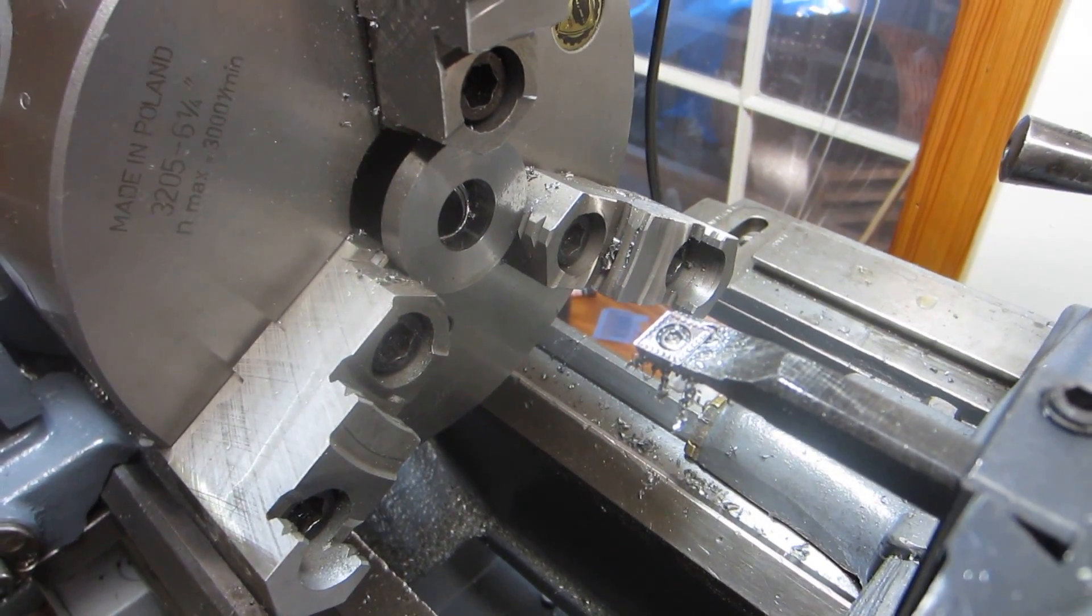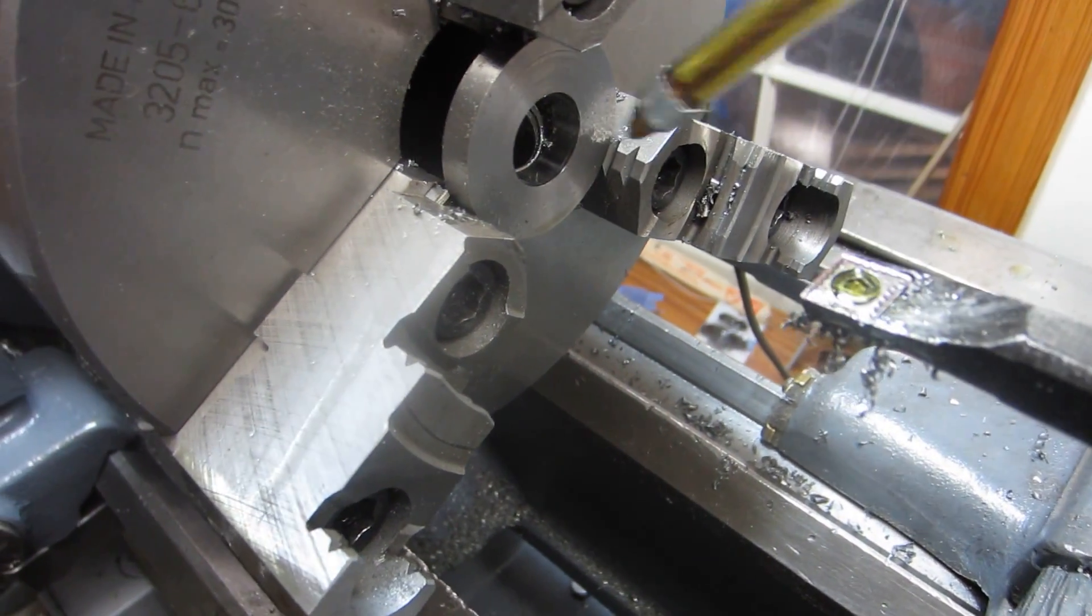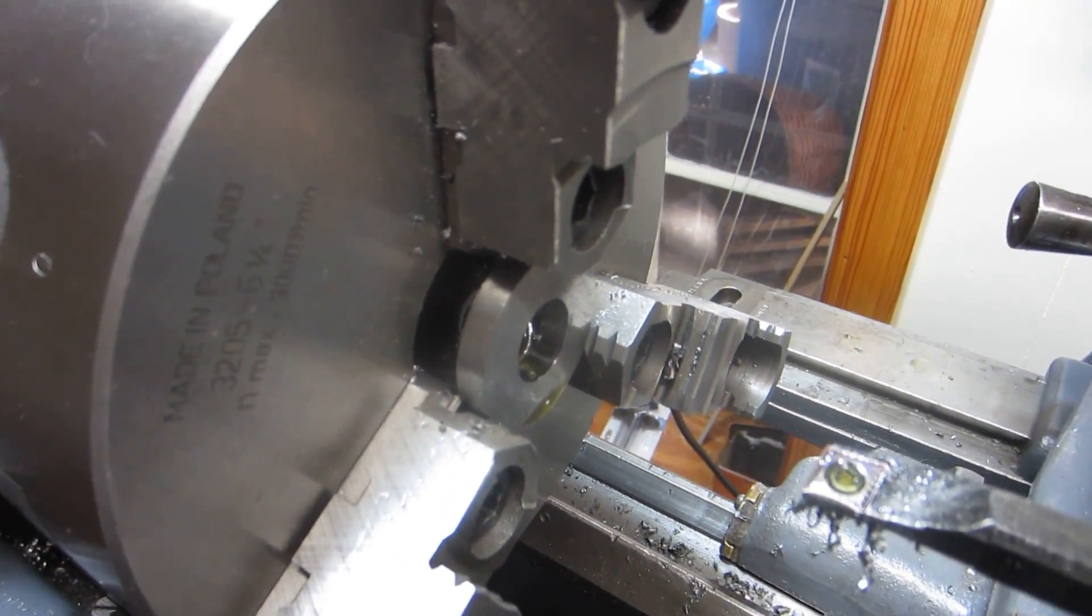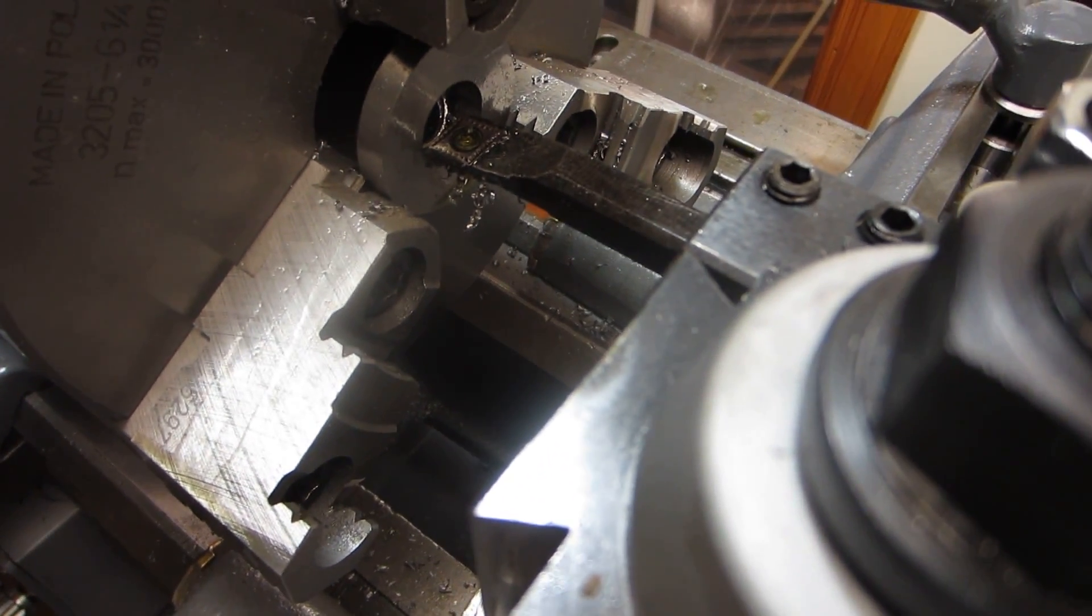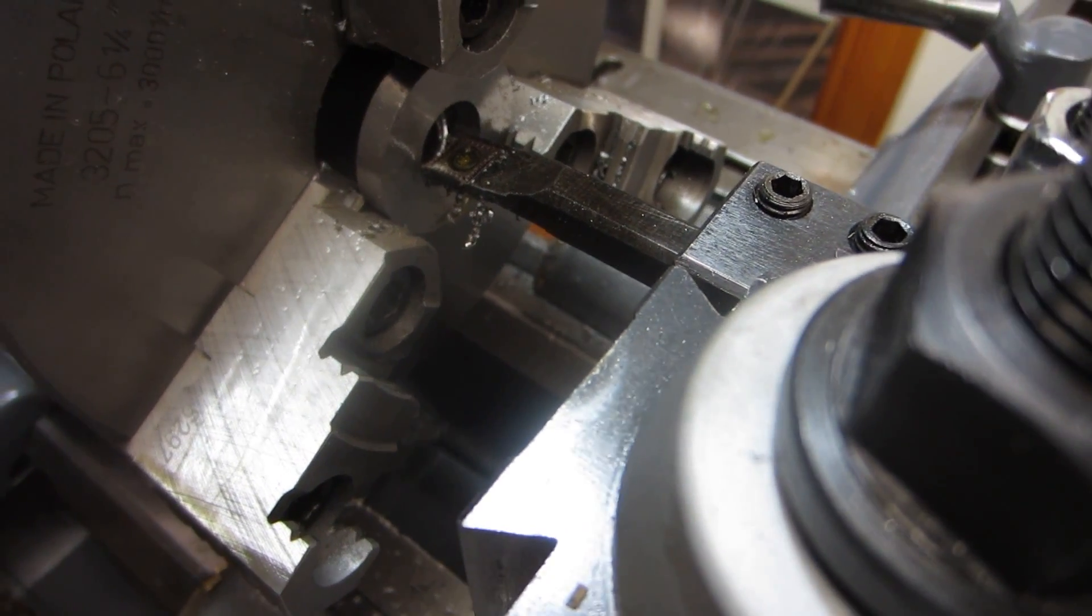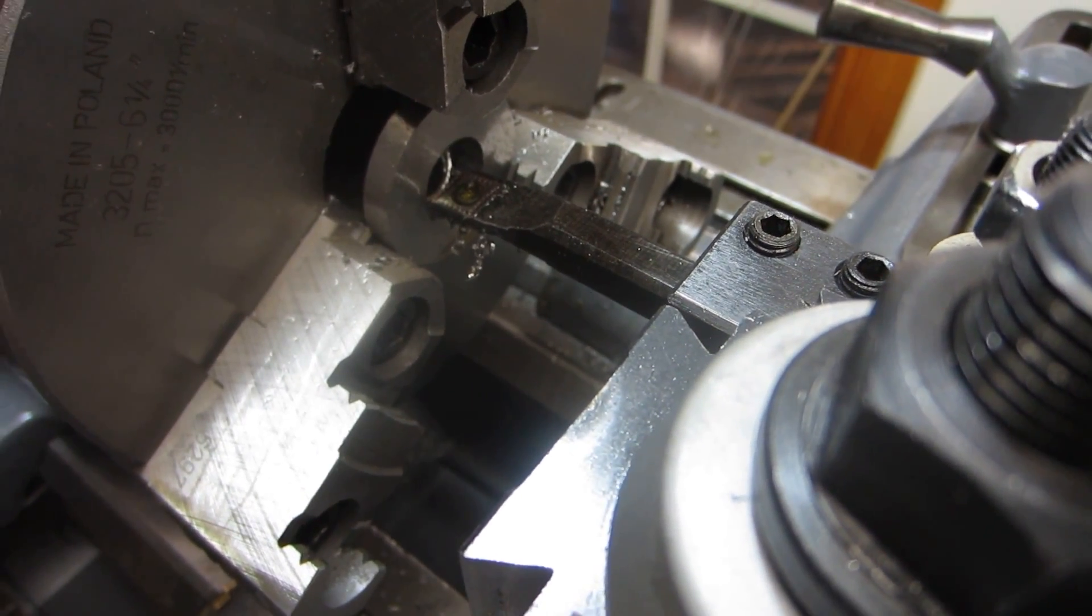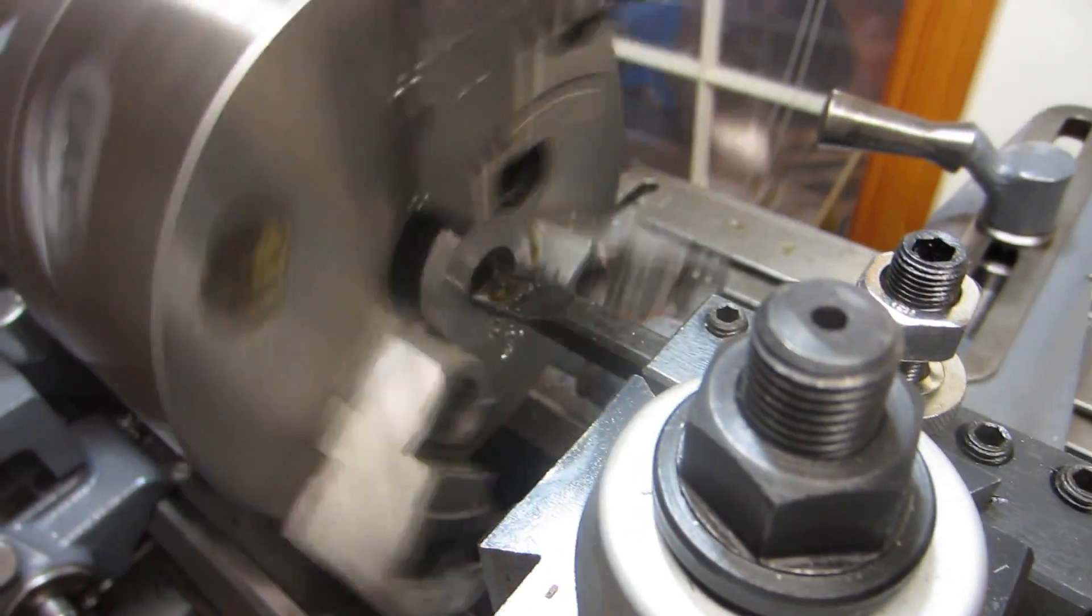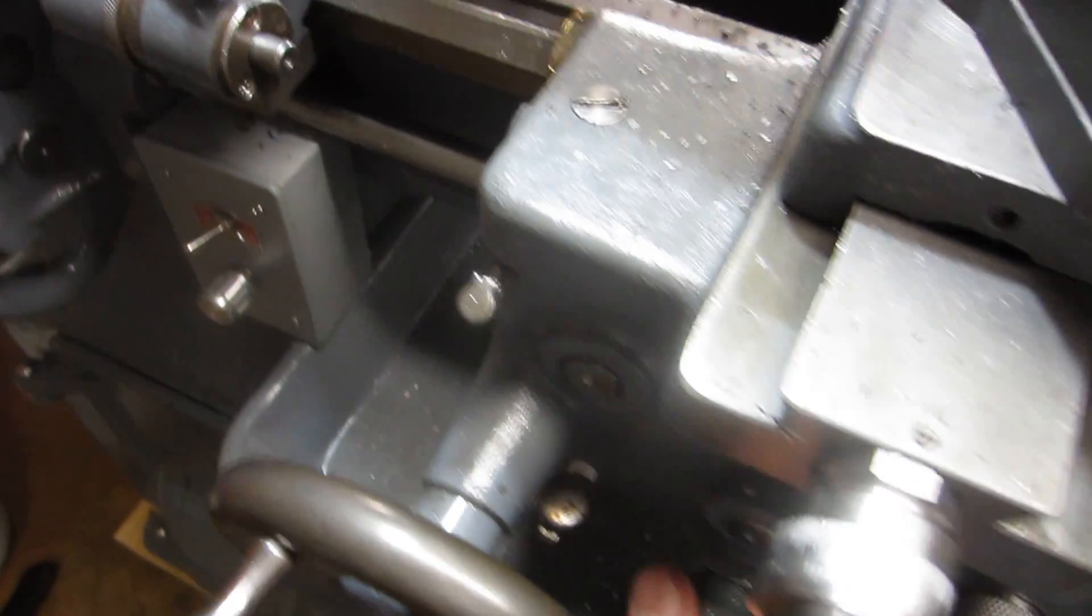Alright, this is boring some untreated, unheat treated A2 tool steel here, trying to take it out to 0.75 inches, and right now it's at 0.68 inches. Just moved out to 70, take it out a little bit more here. 71, 72, we'll see how that works. Power feed turning, engage that.